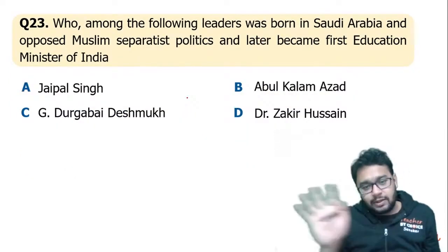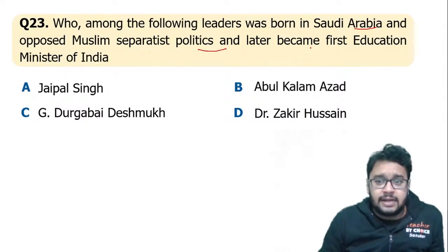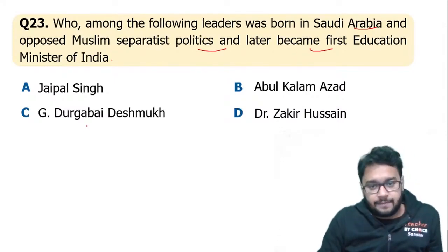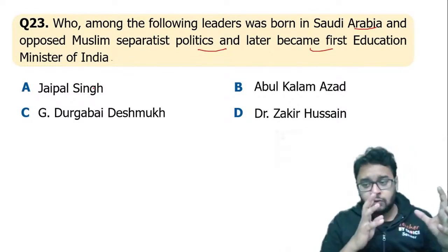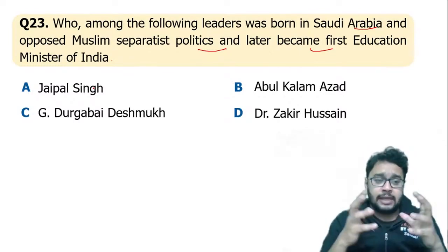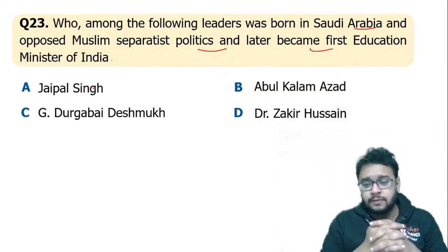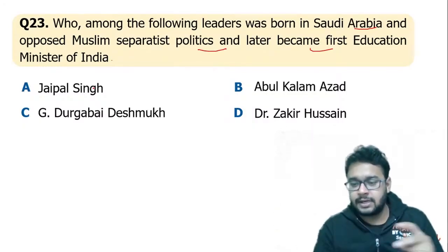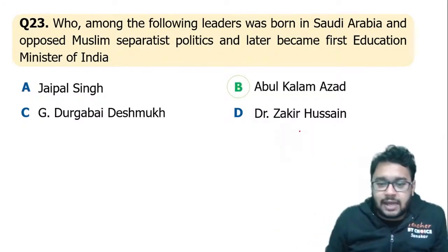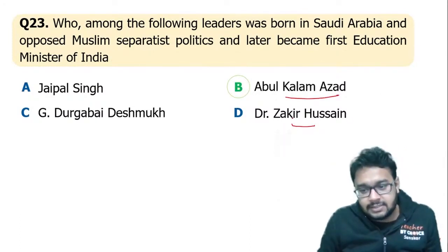Who among the following leaders was born in Saudi Arabia, opposed Muslim separatist politics, and later became the first Education Minister of India? There was a Muslim who was born in Saudi Arabia and opposed having a separate electorate for Muslims. The answer is B — Abul Kalam Azad.